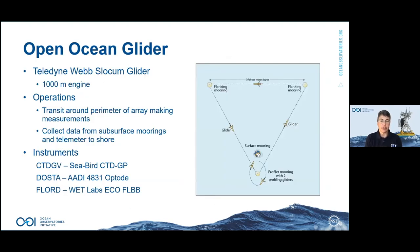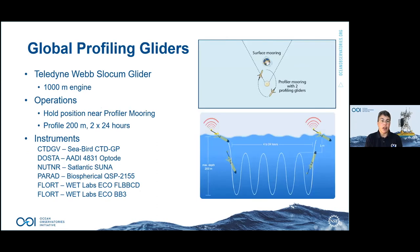At the global sites, open ocean gliders travel between moorings around the array perimeter — also Teledyne Webb Slocum gliders — communicating with subsurface moorings acoustically and serving as data mules to get data to shore. They carry a smaller instrument set because a large amount of power is needed for acoustic communications and they're deployed for a full year. Profiling gliders at global sites hold position near the profiling mooring and collect profiles in the upper 200 meters — above where the MMP profiles — with a larger instrument set since they don't need acoustic communications, also deployed for a year.